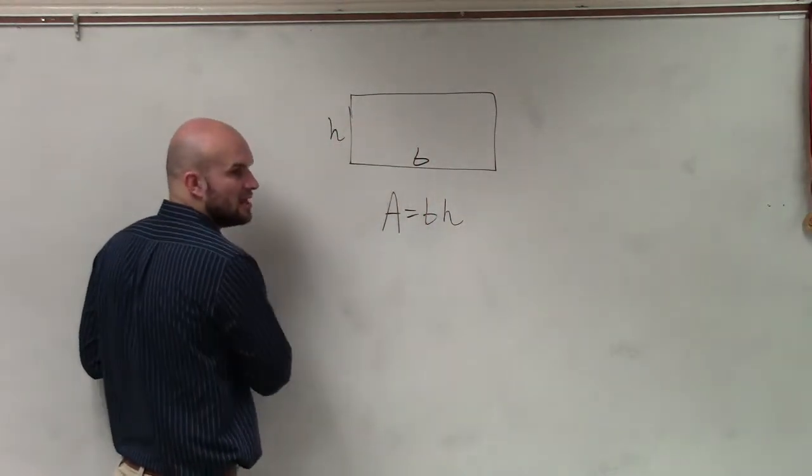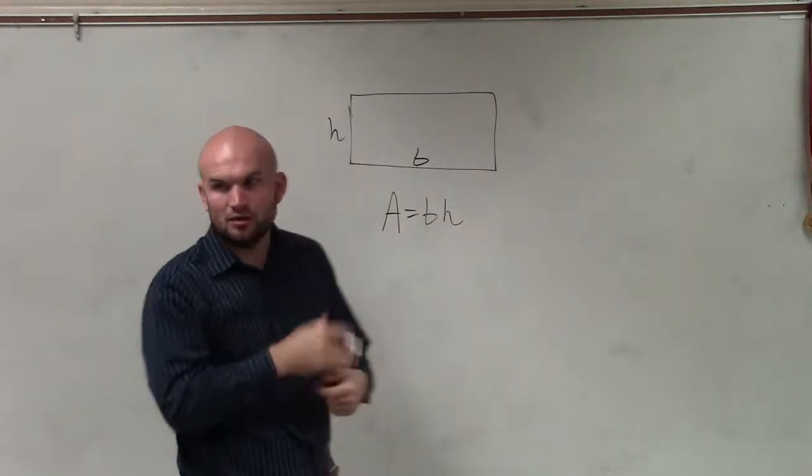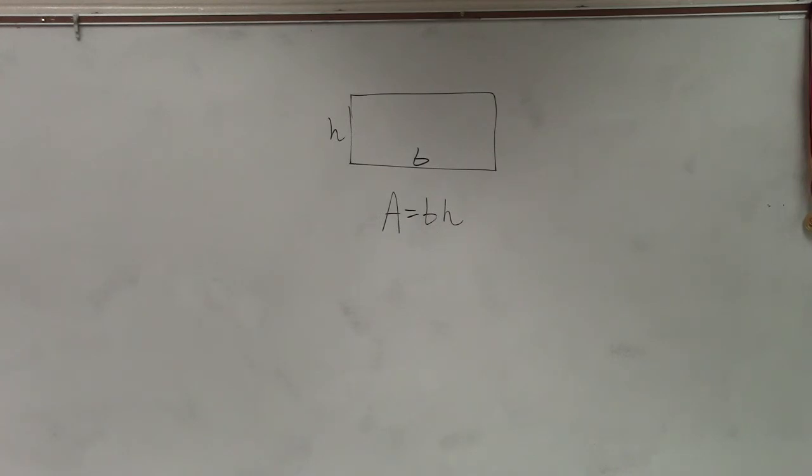So, there's the base, there's the height. Multiply them, find the area. Rectangle, and your square. Make sense? Yes, sir. Pretty easy. You guys want to do some example problems? No.